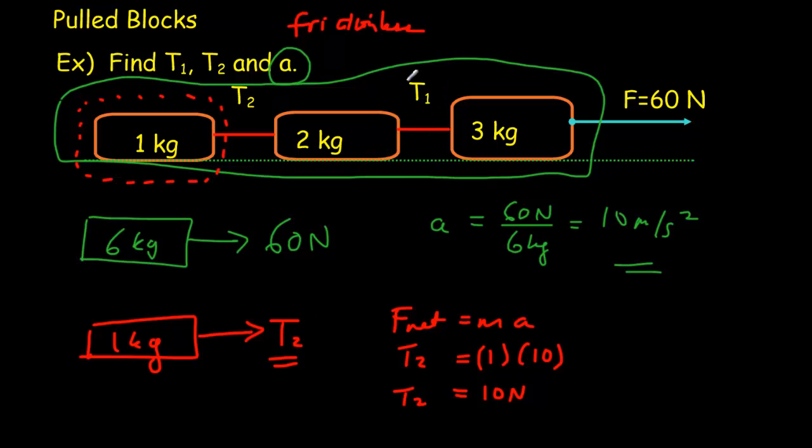Now to get the tension in the other rope, first of all you might want to think about how is the tension going to compare, how will the tension T1 compare to the tension T2? Hopefully you said that it's got to be bigger because you're hauling more mass behind it. But you still have to have the same acceleration. So what we kind of got in this third situation is 1 plus 2, we've got 3 kilograms being pulled by one force, T1.